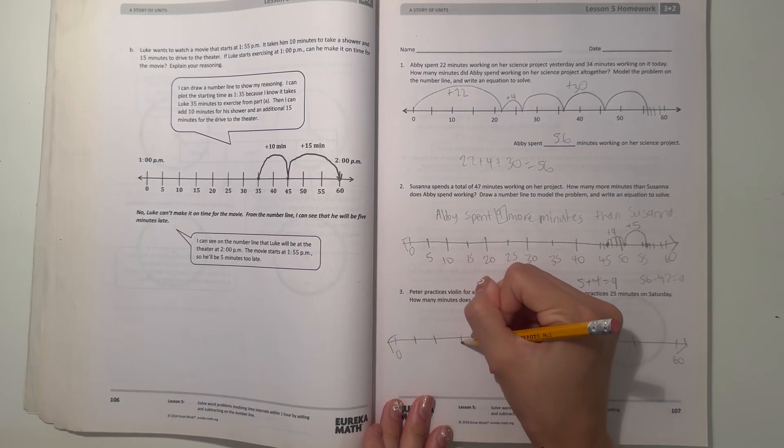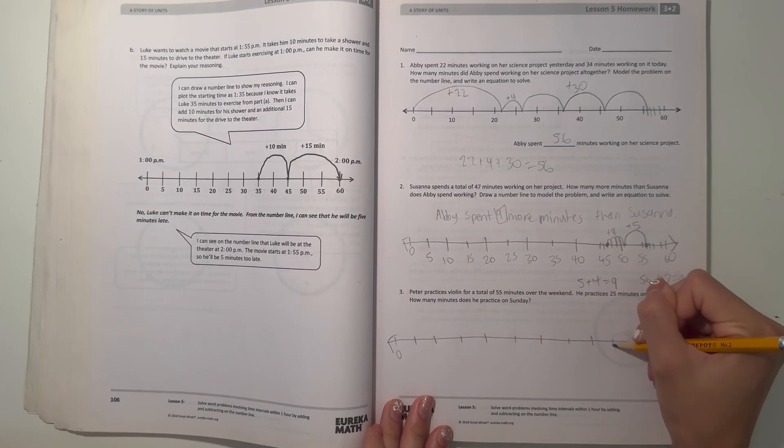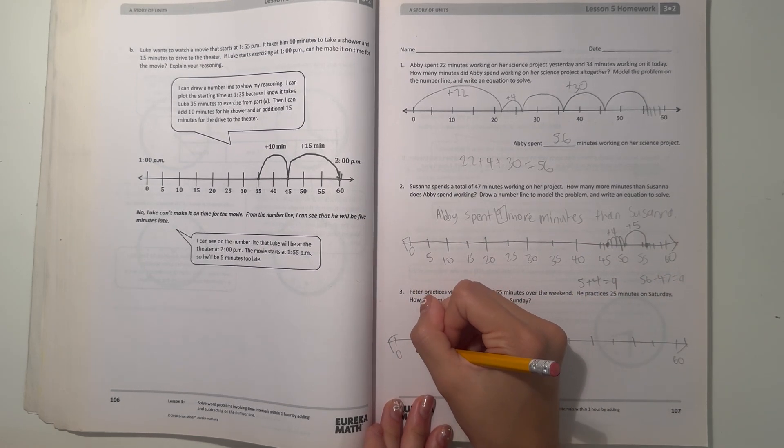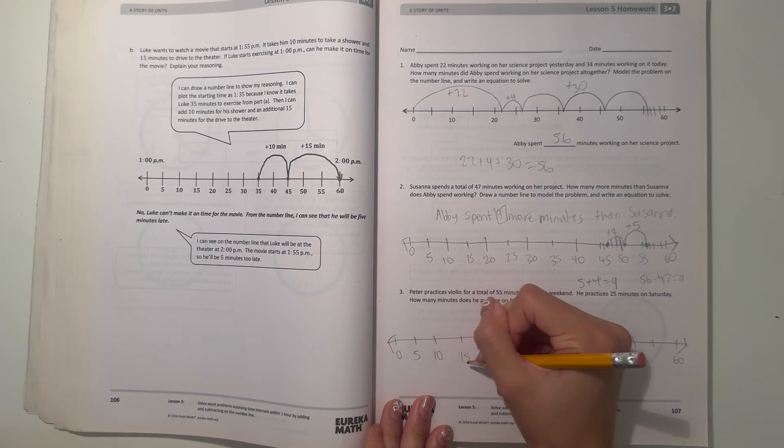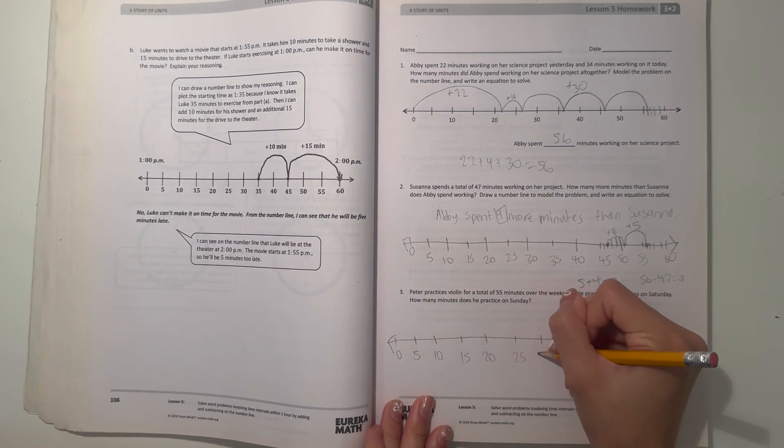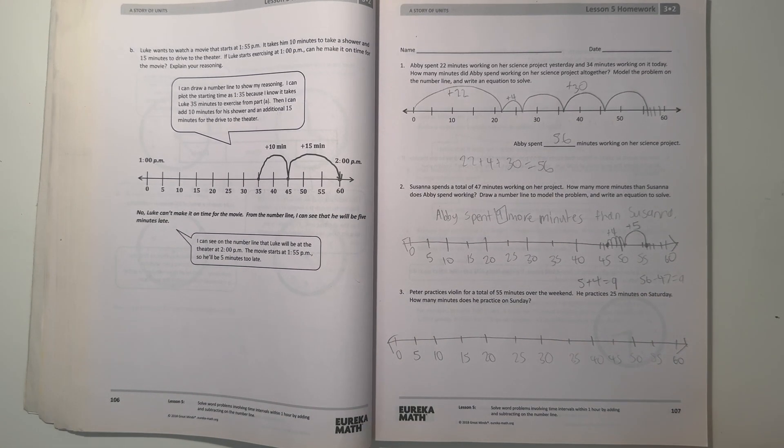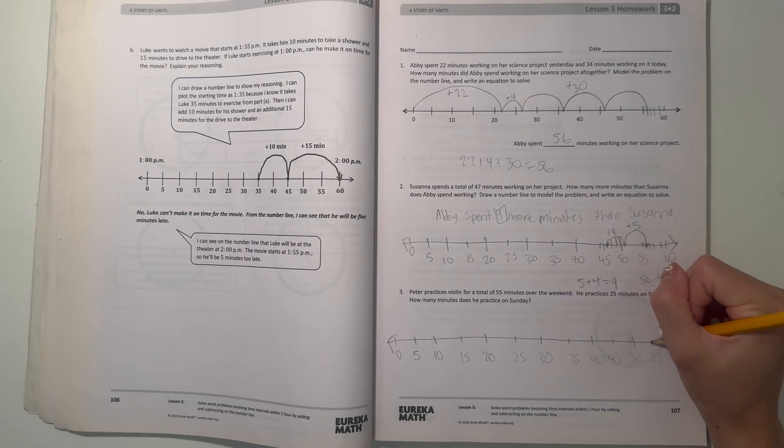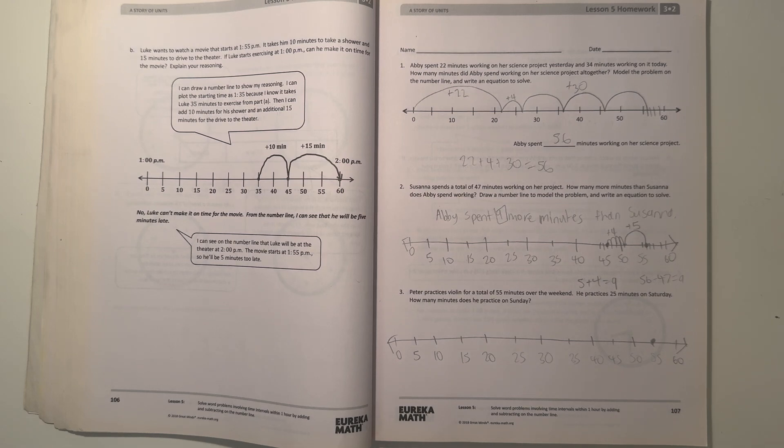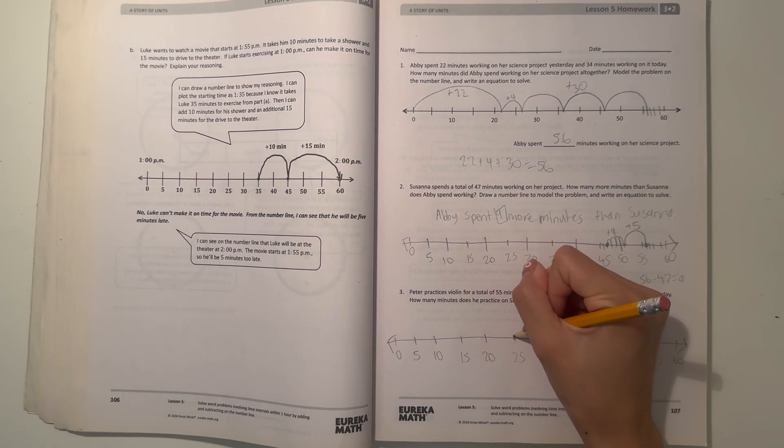Let's draw little tick marks in between. Let's label 0, 5, 10, 15. Alright. So 55 minutes, 55 would be here. So this is the total. So 25, he already practiced 25 on Saturday.